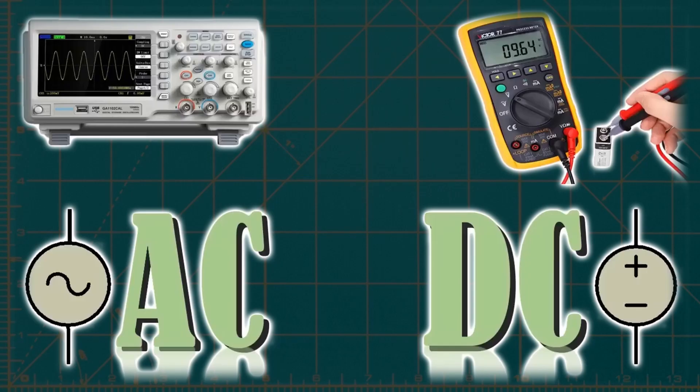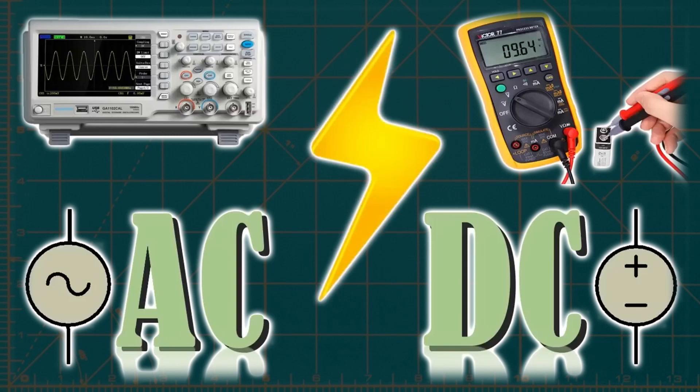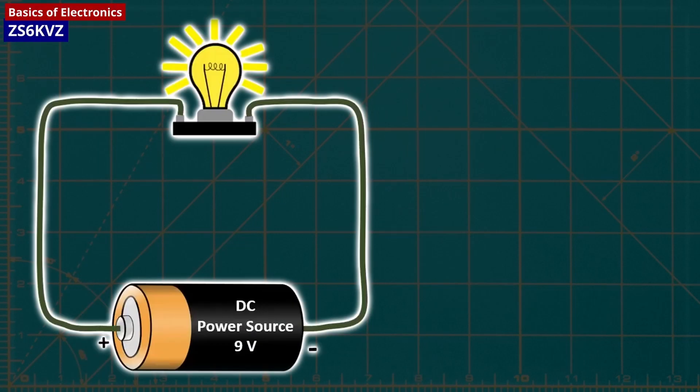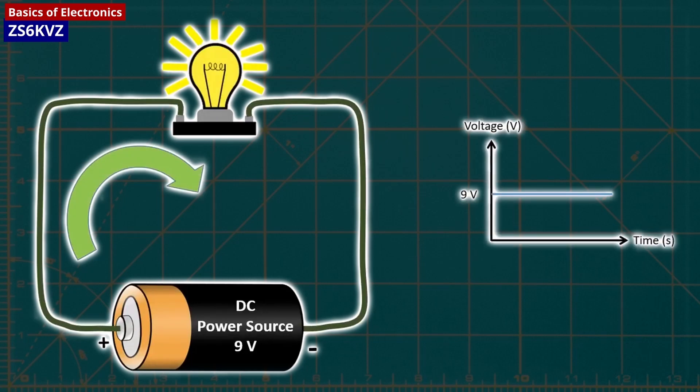There are two types of electrical signals, alternating current (AC) and direct current (DC). With DC, electricity flows in one direction between power and ground. In this arrangement, there is always a positive source of voltage and a ground source of voltage.